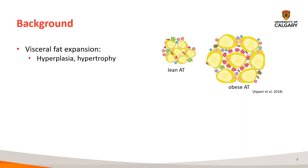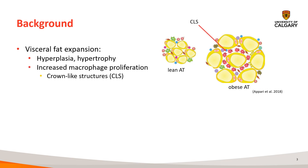Visceral fat expansion is known to occur through hyperplasia and hypertrophy. This expansion then correlates to increased cell death. There is also an expected subsequent increase in macrophage infiltration, as macrophages are indicative of systemic inflammation. Macrophages will essentially form these crown-like structures around necrotic adipocytes to degrade them.